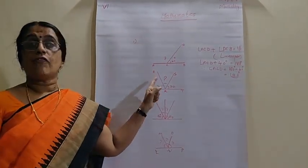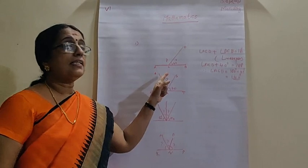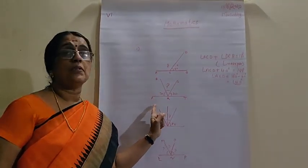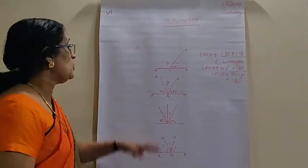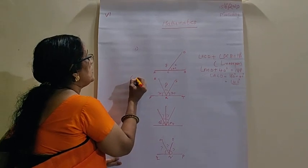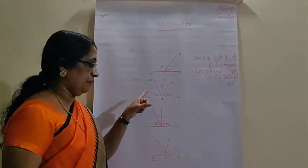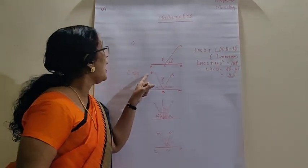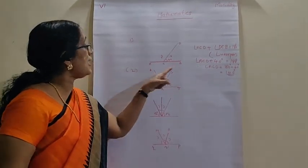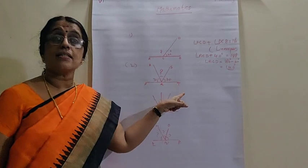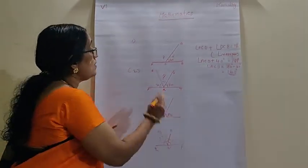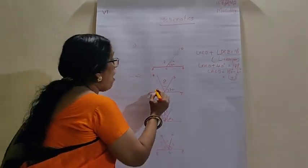So in this way, we can find out the angles that is missing in the linear pair. Suppose you see the second problem. This is the second problem for you. PRQ and QRS and SRT are three angles but they are all in,